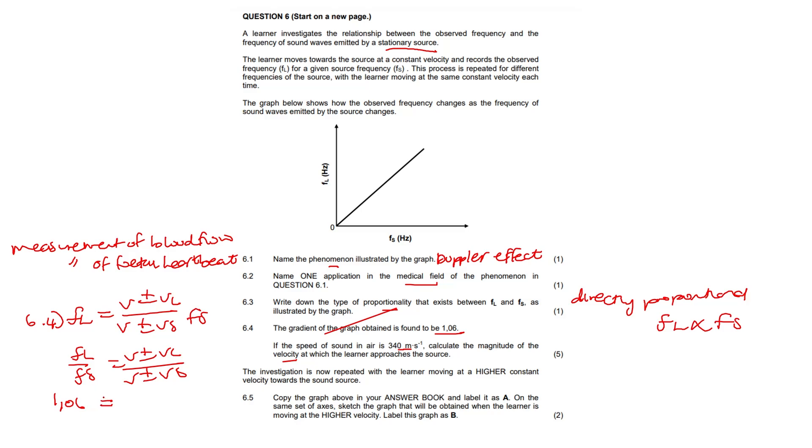They've given us the speed of air, which is 340. We want the velocity at which the learner approaches the source. Then again, the speed of air and the velocity of the source. The source isn't moving, the source is stationary, so that is zero. So I put it into my calculator, I do my math magic, and I get my velocity at which the learner approaches the source to be 20.4 meters per second.